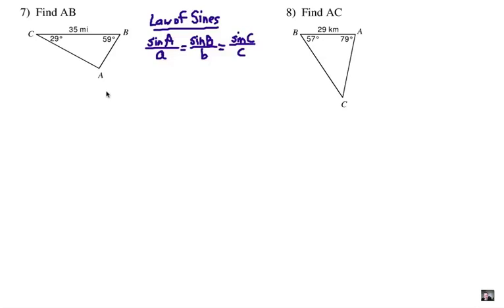The first thing that's pretty important to do is to label the parts that you have here. Here is angle A and opposite that is 35 miles. So that side right there, we're going to call lowercase a. Here's angle B and across from that would be side B. And here is angle C and across from that would be side C, lowercase letters. And over here, number 8, here is angle A, so this is A. Here is angle B, so we're going to label this side lowercase b. And here is angle C, so that 29 that we know is called C.